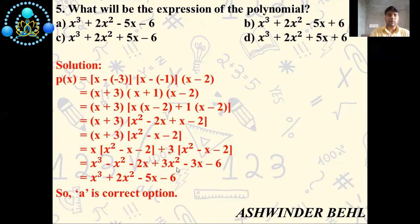When we solve this equation, we will get x³ + 2x² - 5x - 6. So A is correct option.